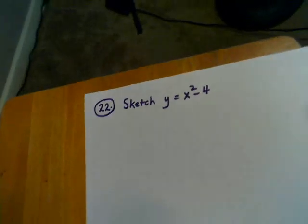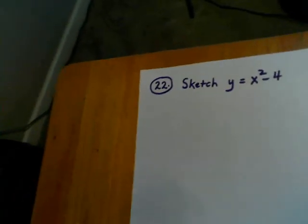Question number 22 asks us to sketch a function, y equals x squared minus 4. I want us to go immediately to the paper here so I can talk to you about some things that you need to notice, and we'll work through it.